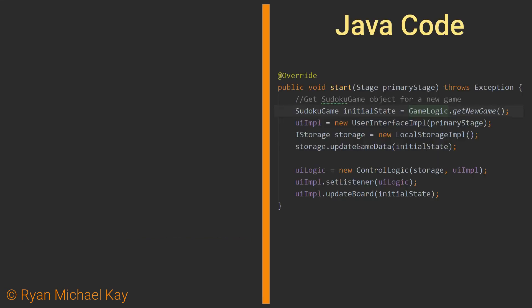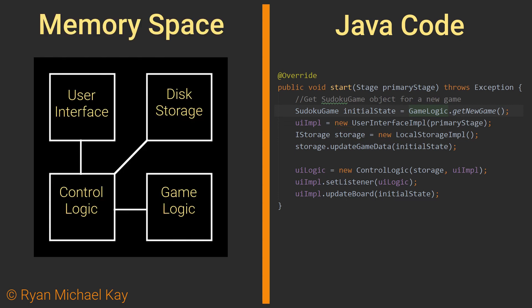For example, in the application I will be using as a teaching tool in several lessons, one of the first instructions — also known as methods — which is executed is called start. The new keyword is one of the ways in which we create objects in memory space. A good way to think about an object is to imagine a real-world object such as a person. By the time these instructions have completed, all of these different objects, each with different names and jobs, are sitting in memory space, waiting for the user to start interacting with them.